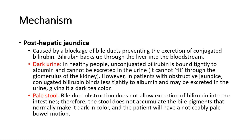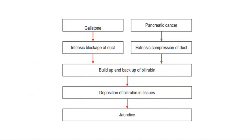Whereas for pale stool, bile duct obstruction does not allow excretion of bilirubin into the intestines. Therefore, the stool does not accumulate the bile pigments that normally make it dark in color, and the patient will have a noticeably pale bowel motion. This is a flow chart showing how post-hepatic conditions lead to jaundice, such as gallstone or pancreatic cancer. There is obstruction — either intrinsic blockage of the bile duct due to gallstones, or extrinsic compression of the duct due to tumor — causing buildup and backup of bilirubin, with accumulation and deposition in tissues causing jaundice.